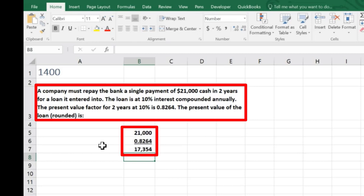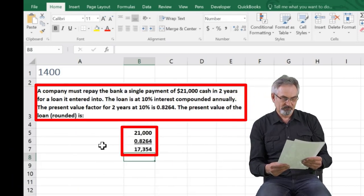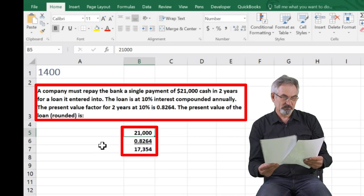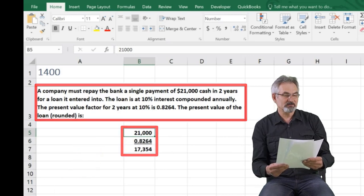times the factor that was given to us, and therefore the present value, today's value, is $17,354 if we were to pay back the loan of $21,000 after two years at 10%.